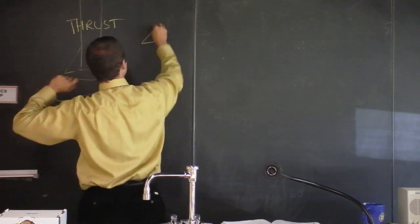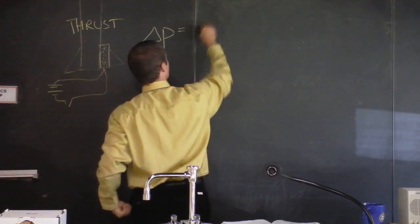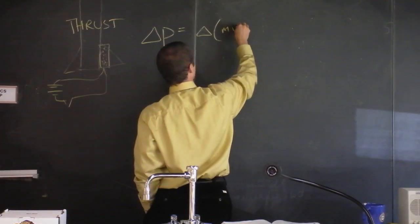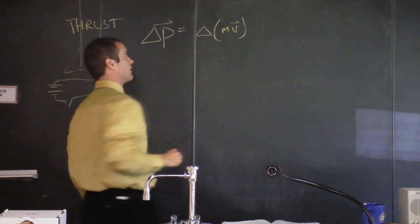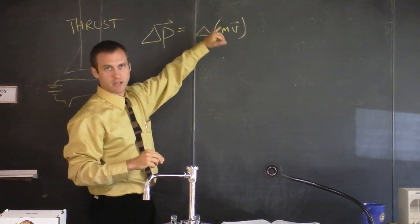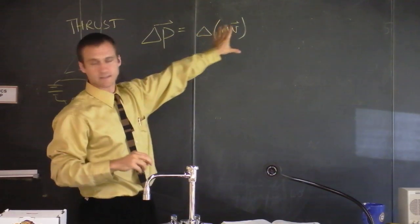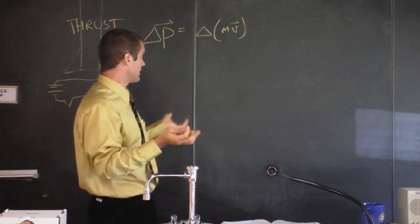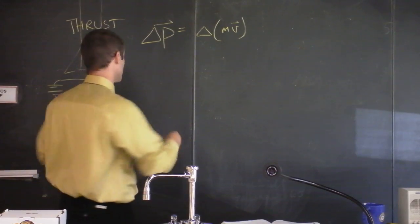And we know that change in momentum, well, I guess that's going to be change in M times V. That's what momentum is. So change in momentum would be change in mass times velocity. And we previously said that we're not going to allow the mass to change. But now let's allow the mass to change.